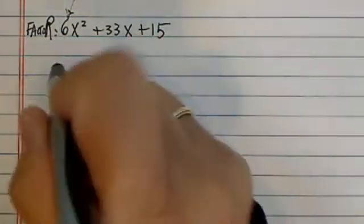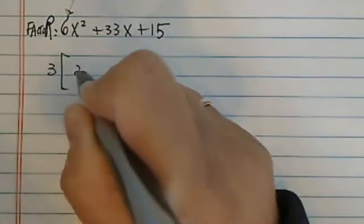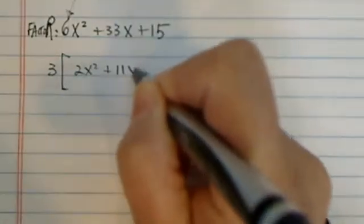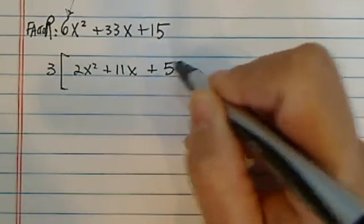Trying to factor a polynomial when the coefficient is not 1 can be difficult. There is an easy and trickier way to do it. In this video clip we're going to show you how to do it. So let's factor 3 out right away because that's a common one: 2x squared plus 11x plus 5.